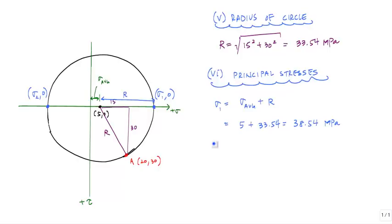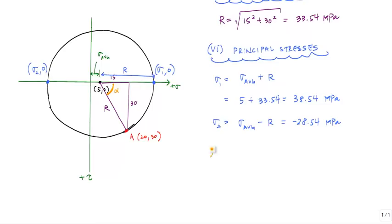Similarly, for sigma 2, the minor principal stress, I would just go sigma average minus the radius. Sigma 2 is negative 28.54 megapascals. The angle of orientation associated with sigma 1 is this angle, which I will call alpha. Alpha equals the inverse tangent of 30 over 15, which is 63.44 degrees.